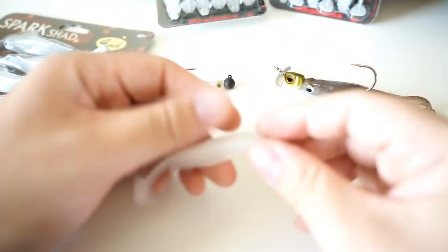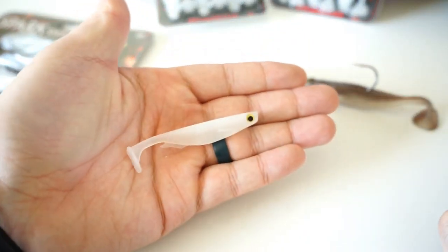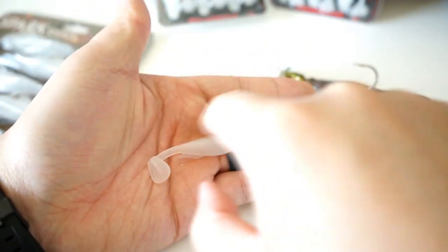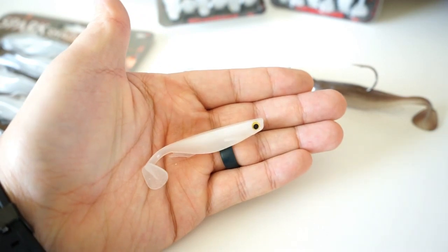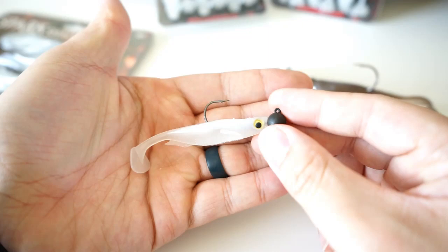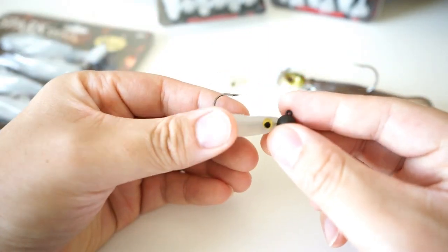You get the actual realistic eyes on a swimbait that's not just painted on. The third thing I like about it the most is that it's got a flat top. Your hookup ratios actually increase because there's less plastic out there.